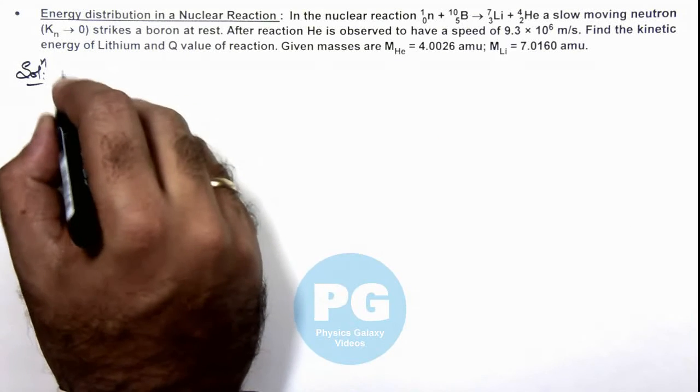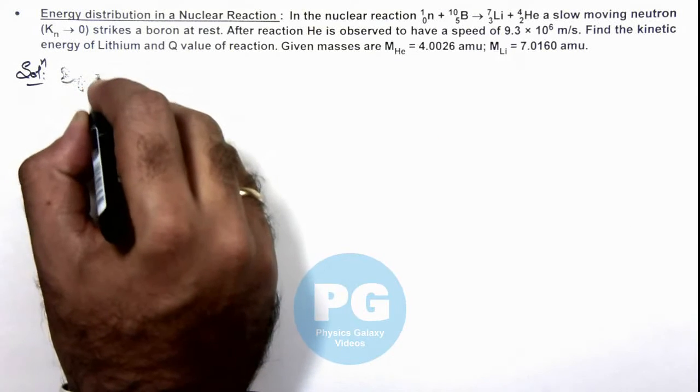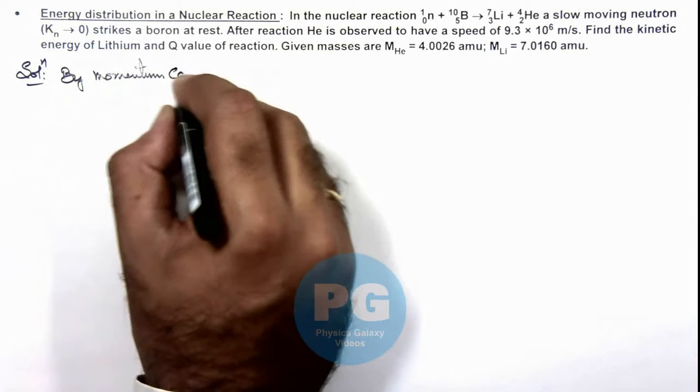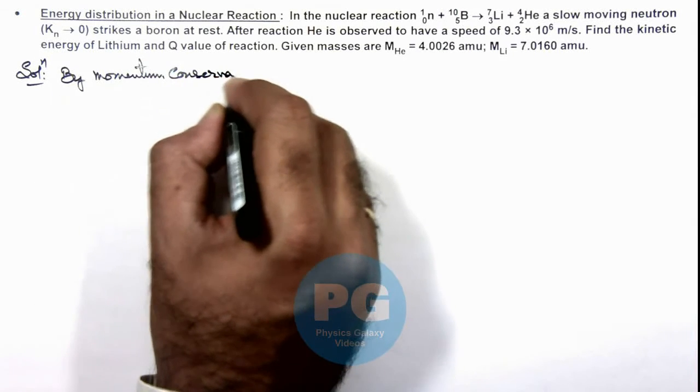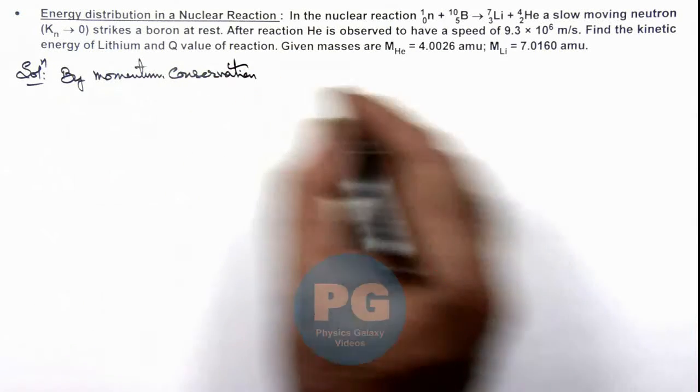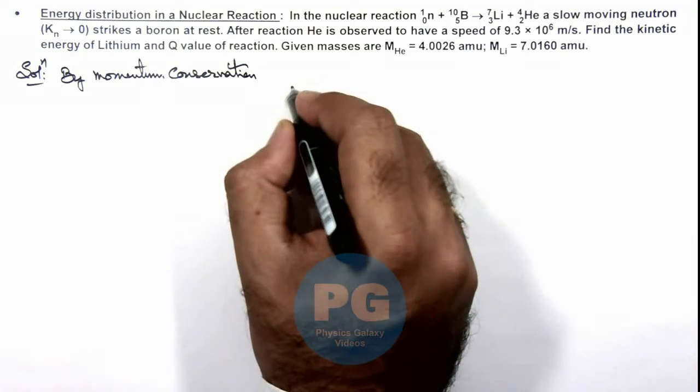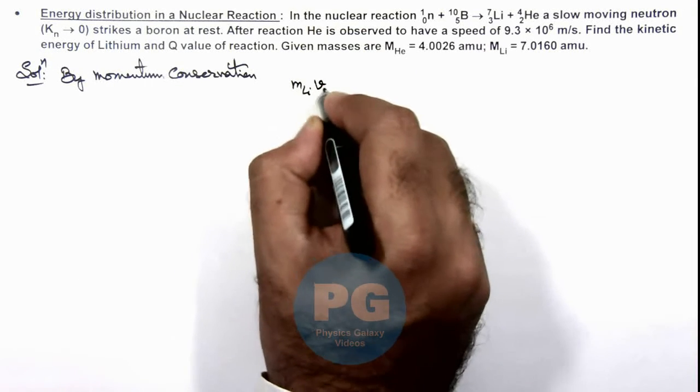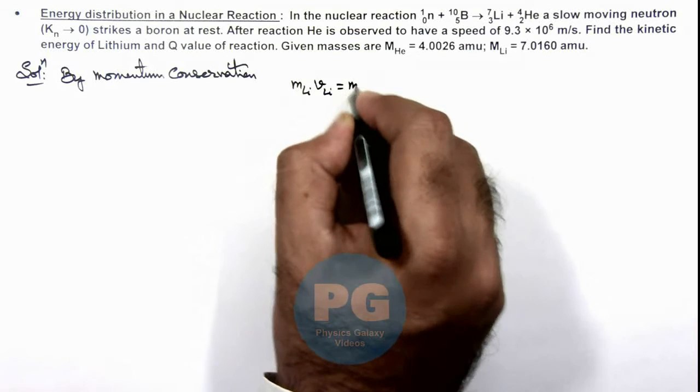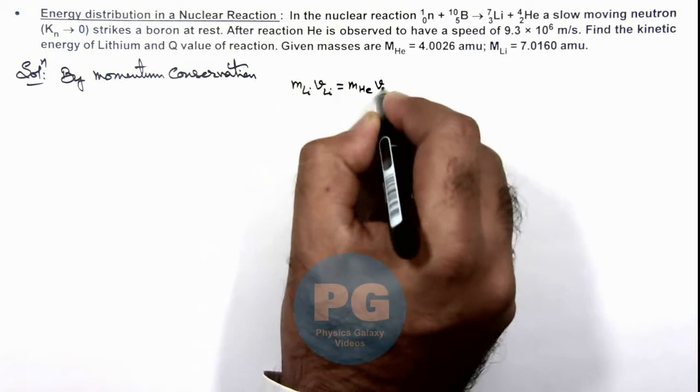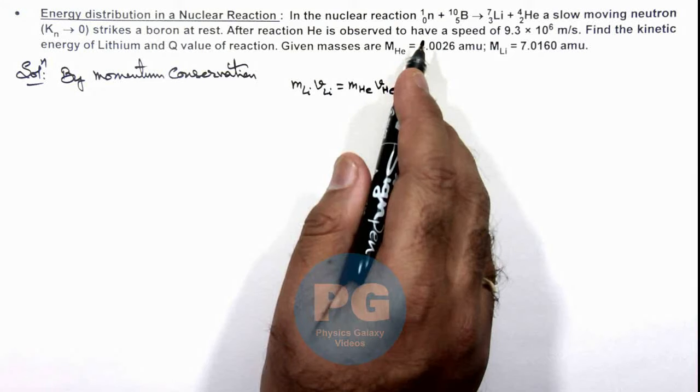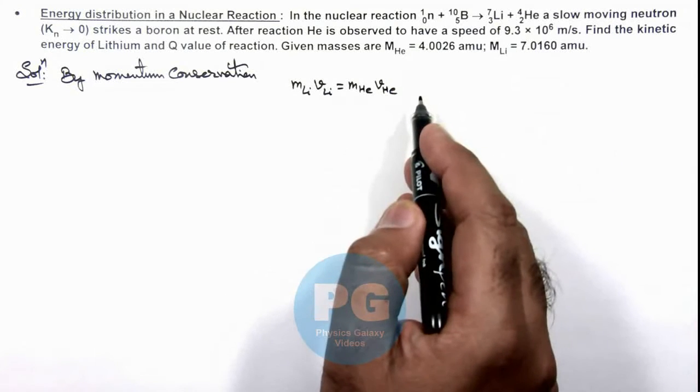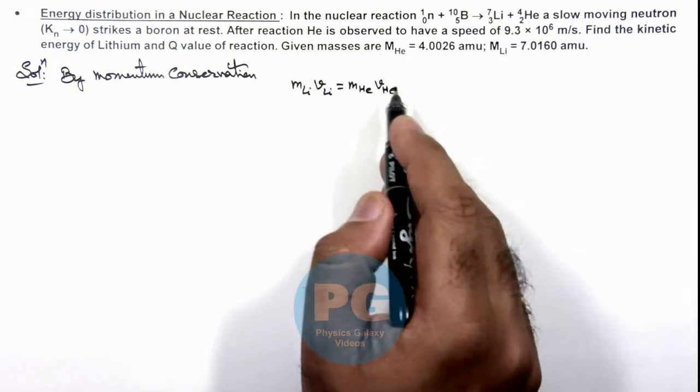we can write by momentum conservation: after reaction, mass of lithium multiplied by the speed of lithium equals mass of helium multiplied by the speed of helium, because initial momentum was zero. So finally, lithium and helium must be having equal and opposite momentum, so their magnitude must be equal.